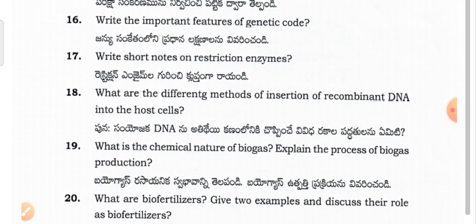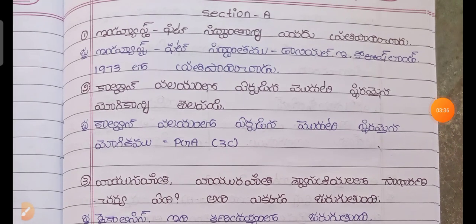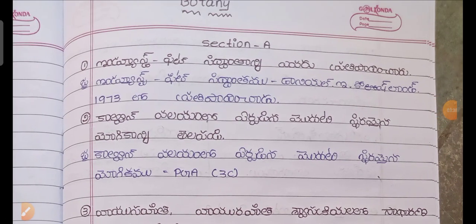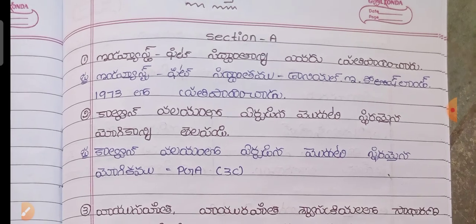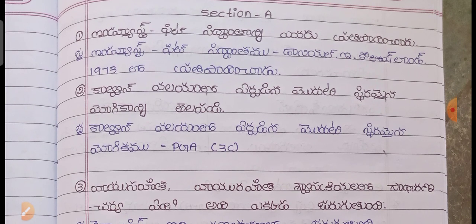If you want the related video, I will provide the link in the description box. Let me now provide the answers for the Second Year Bridge Course students. The first answer is about the Induced Fit theory — Induced Fit Siddhantamu — proposed by Daniel E. Koshland in 1970.